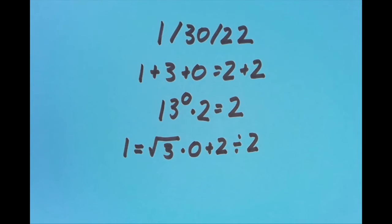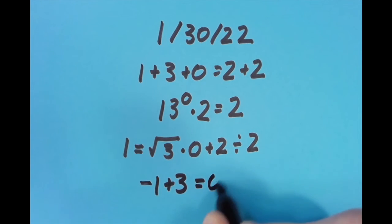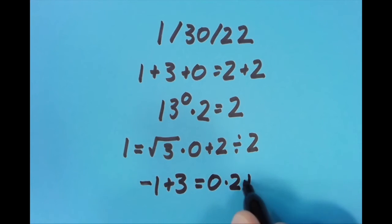The last thing I want to do is put the equal sign between the 3 and the 0. And so I did negative 1 plus 3 equals 0 times 2 plus 2, which is also true.